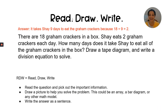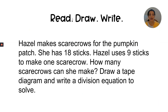Are you ready to do it by yourself? If not, you can always go back and watch the lesson again. When you're ready, pause the video, read the question, take down any important information, and draw it out on paper, a dry erase board, or Jamboard on your own. When you've done your very best, go to the description box below to check your answer. Hazel makes scarecrows for the pumpkin patch. She has 18 sticks. Hazel uses nine sticks to make one scarecrow. How many scarecrows can she make? Draw a tape diagram and write a division equation to solve.